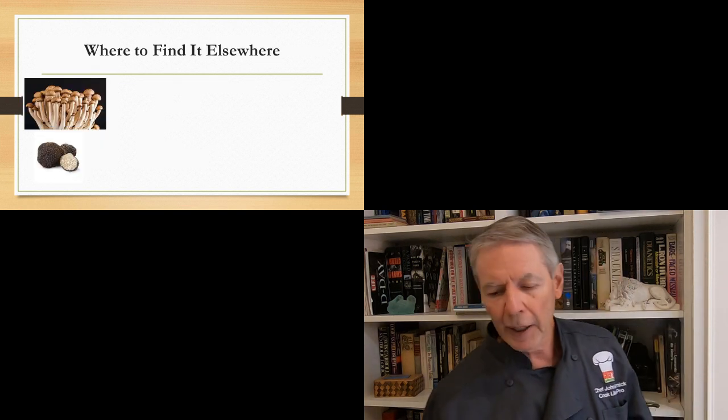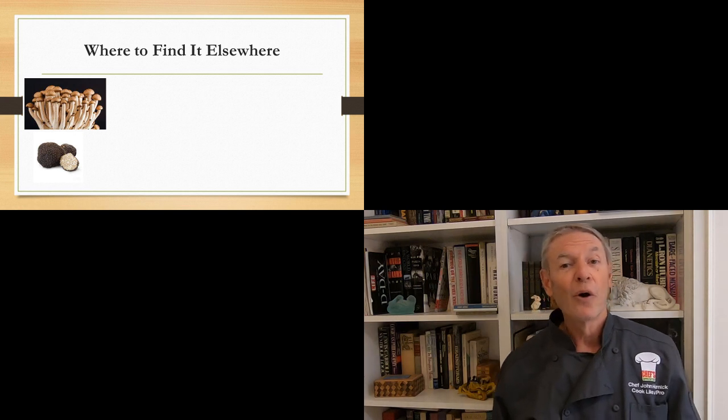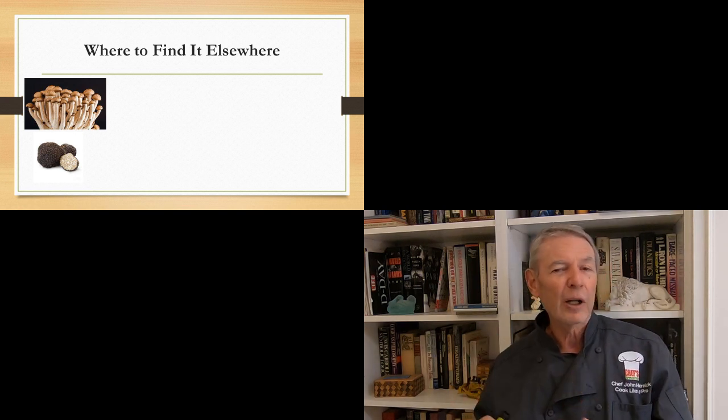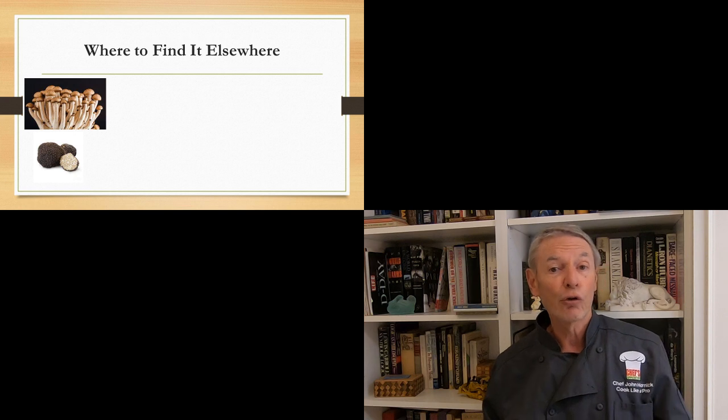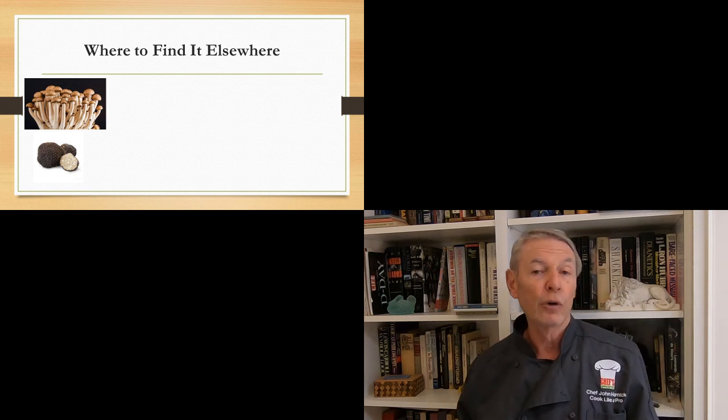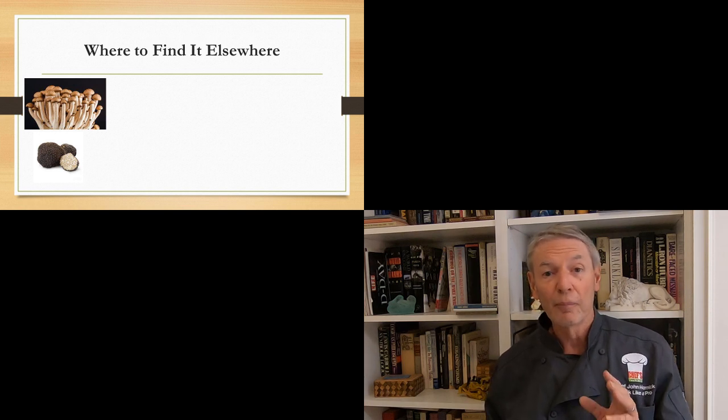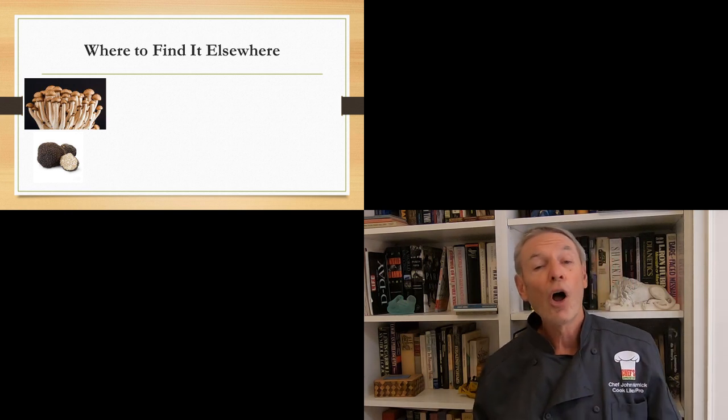Now, where can you find umami outside of Japanese cooking? Well, basically, you can find it almost anywhere. And maybe, as I'll talk about a little bit later, maybe you can find it anywhere. Now, you can find it in mushrooms and in truffles. And mushrooms, by the way, are used in a lot of Japanese food. And they have a whole lot more varieties of mushrooms in Japan than we have here. But as I said, mushrooms and truffles.